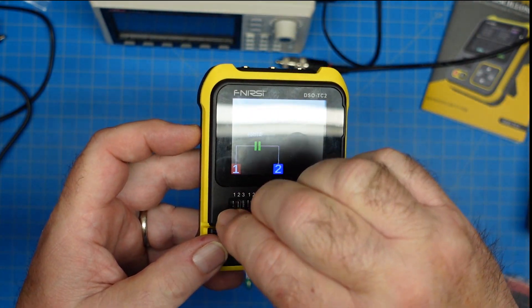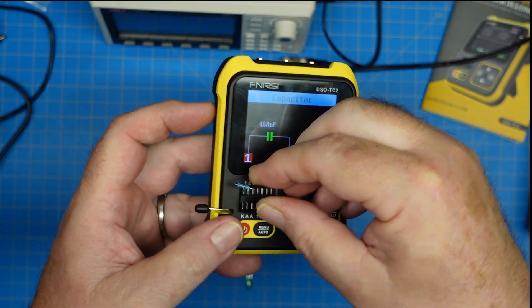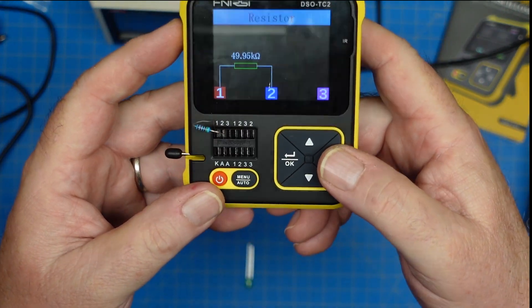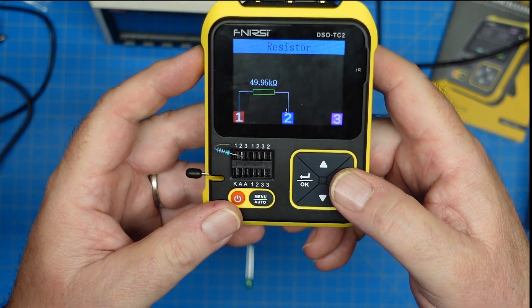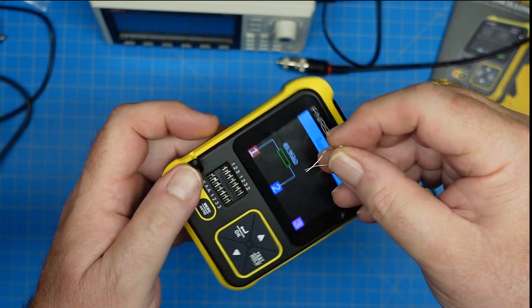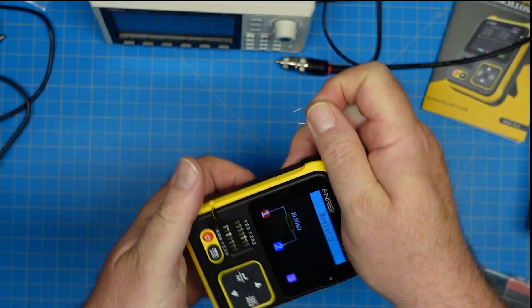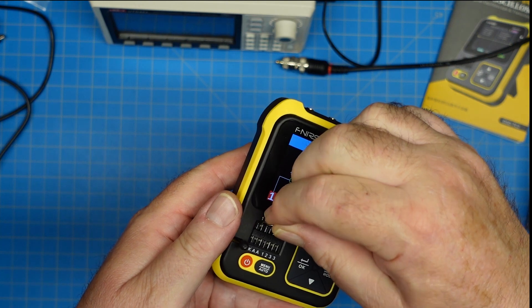Here's a resistor. Lock him in, hit test. There we go, 50k ohm resistor. Pretty cool, huh? And I believe that you don't have to put them in ports one and two when you're testing straight through components.